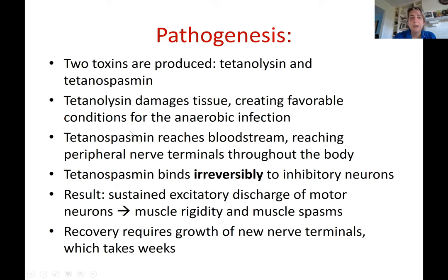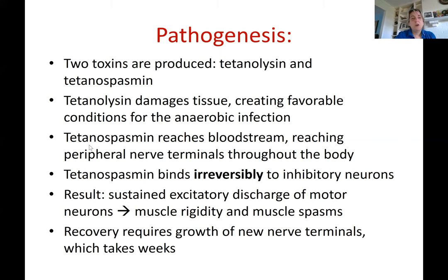Tetanospasmin reaches the bloodstream and travels to peripheral nerve terminals throughout the body. This is important: it binds irreversibly to inhibitory neurons. Unlike sulfa drugs, which reversibly bind to PABA receptors, this toxin cannot be unbound once attached.